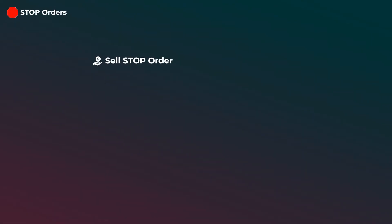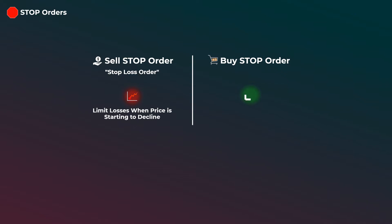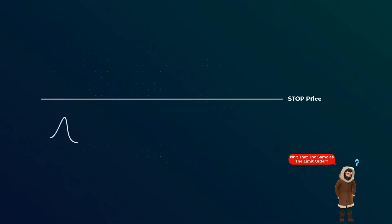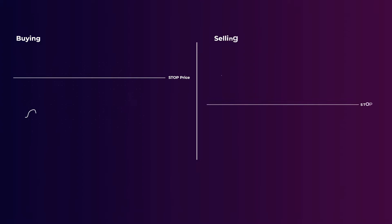The next order type is the stop order. A stop order is used to limit your losses when a coin is starting to decline in price — sometimes it is called a stop loss order. A stop order can also be used when you want to buy only when the coin is beginning to rise in price. A stop order is basically buying or selling when the price reaches a specified price called the stop price. You may be thinking — isn't that the same as a limit order? Well, they are actually pretty different. With a stop order, you can set the stop price higher than the market price when buying, or lower than market price when selling. It lets you do whatever you want and doesn't try to get you the best prices like the limit order.